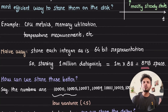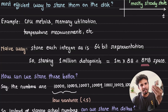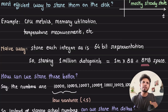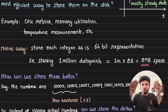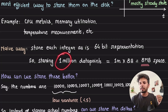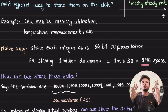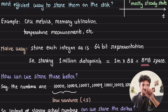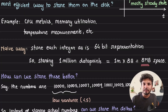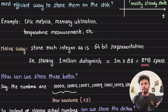A naive way to store an integer is to store it like an integer on disk. For example, a 64-bit integer takes up 8 bytes. When storing 1 million data points for a particular metric, 1 million multiplied by 8 bytes per data point requires 8 MB of space. That's pretty decent, but how can we store this better?